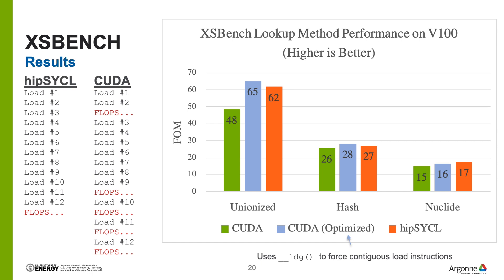Our results for XSBench are shown here. The graph indicates our figure of merit: the number of cross-section lookups performed per second — higher is better. There are three different methods shown: the unionized, hash, and nuclide methods, which all make different trade-offs including memory footprint size. Looking at CUDA performance in green and HIP-SYCL in red, for the hash and nuclide methods performance is very similar, while the unionized method shows a significant performance difference.